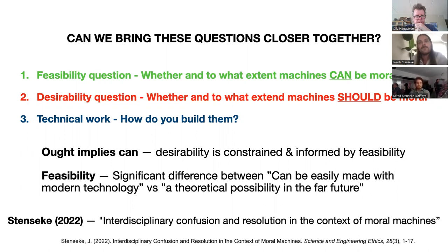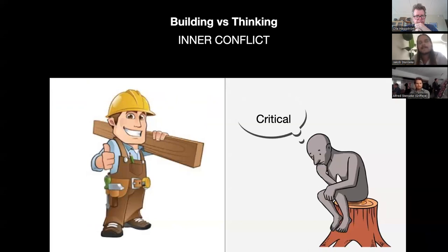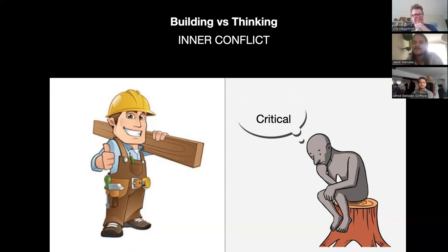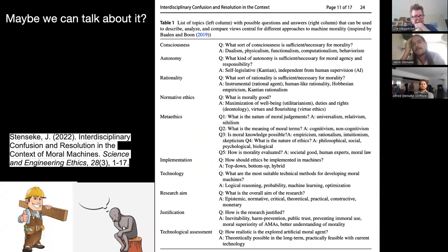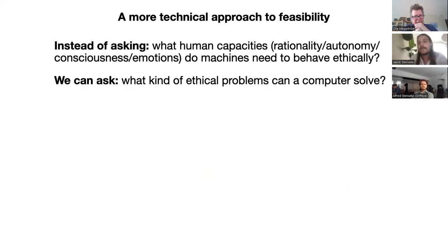I have one previous paper on how to resolve this tension between those who just want to build stuff and those who want to be really critical. Today I'm going to talk about a more technical approach to the feasibility question. Instead of asking what human capacities do machines need to behave ethically, I'm going to ask: what kind of ethical problems can a computer solve?